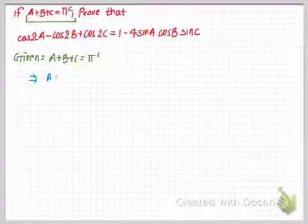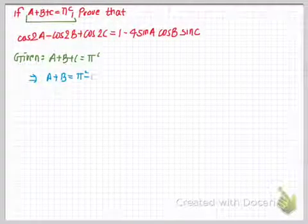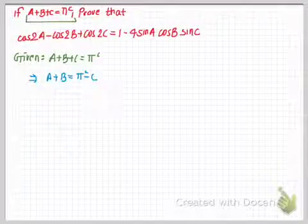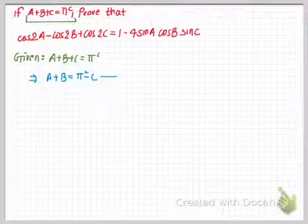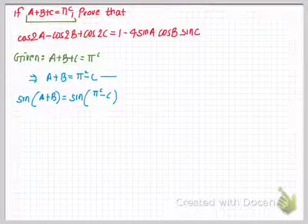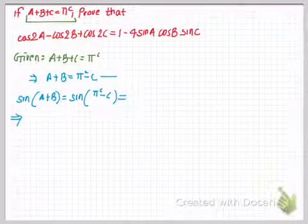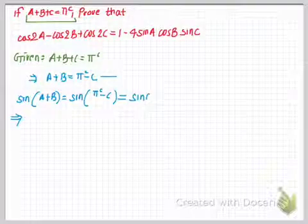Let me subtract C on both sides of the equation, so this gives A plus B is equal to pi radian minus C. Now I'm going to operate this equation first by sine. On operating by sine I have sine of (A plus B) equals sine of (pi radian minus C).